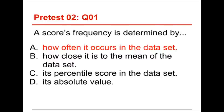How close it is to the mean of the data set, we're going to deal with that later. It's something called a deviation score that you use in the standard deviation. Its percentile score in the data set? No, that's an indication of its percentile score, and its absolute value is sort of neither here nor there. A score's frequency is determined by how often it occurs in the data set.